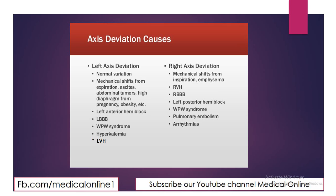Right Axis Deviation can be caused by inspiration, emphysema, Right Ventricular Hypertrophy, Right Bundle Branch Block, Left Posterior Hemiblock, Wolf-Parkinson-White Syndrome, Pulmonary Embolism, and arrhythmia.